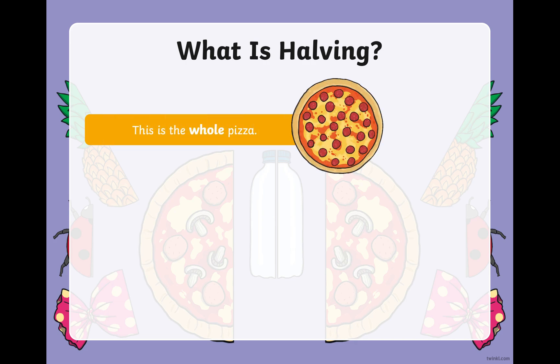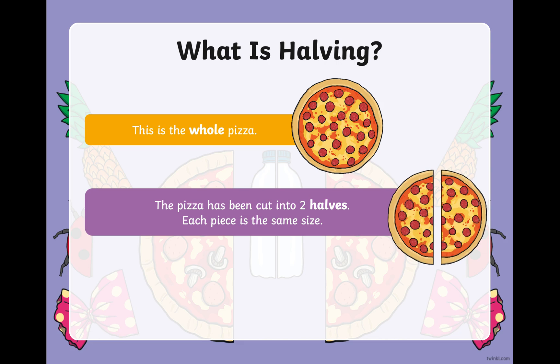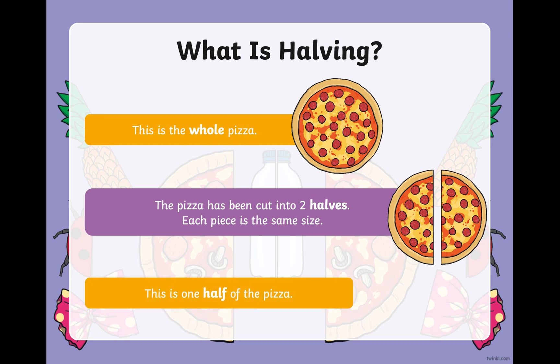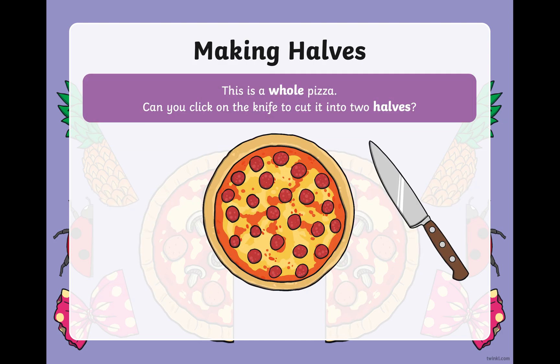This is a whole pizza. The pizza has now been cut into two halves. Each piece is the same size. This is one half of the pizza. Now to make sure something is half, it has to be the same on both sides. It has to be the same size.